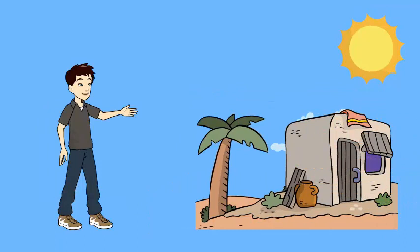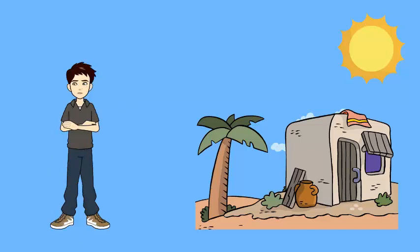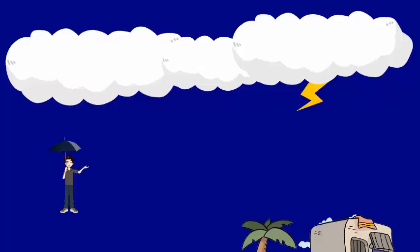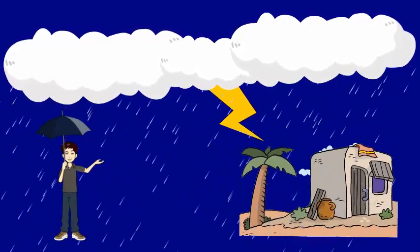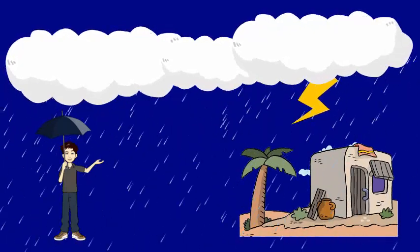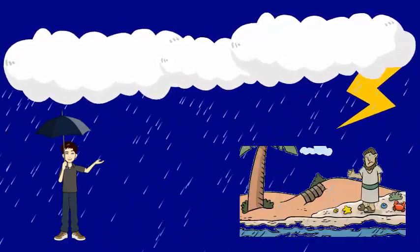The other man decided to build his house on sandy soil close to the stream. Maybe he thought it was easy to build on smooth ground. Then the big storm came up with the wind and rain and washed it away.